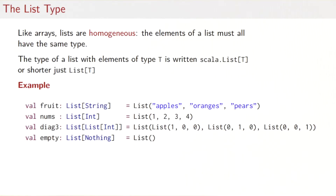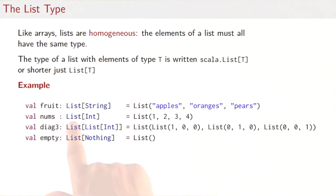Looking at list types — essentially the same as what we constructed last week. A list with string elements is written List[String], a parameterized type. So 'fruit' is a List[String], 'numbers' is a List[Int], 'diagonalThree' is a List[List[Int]], and 'empty' is a List[Nothing] — a list that contains no elements and therefore uses the bottom type as its element type.